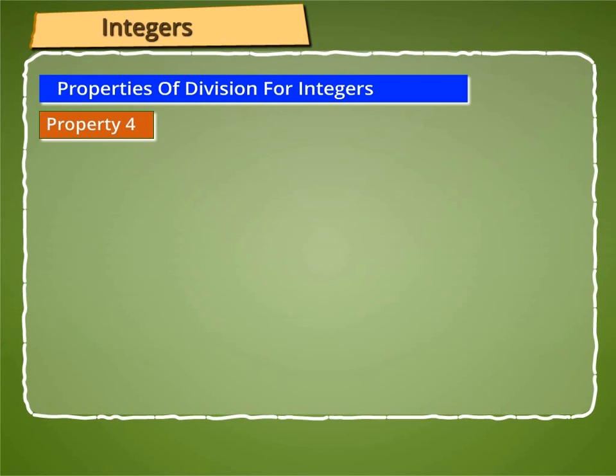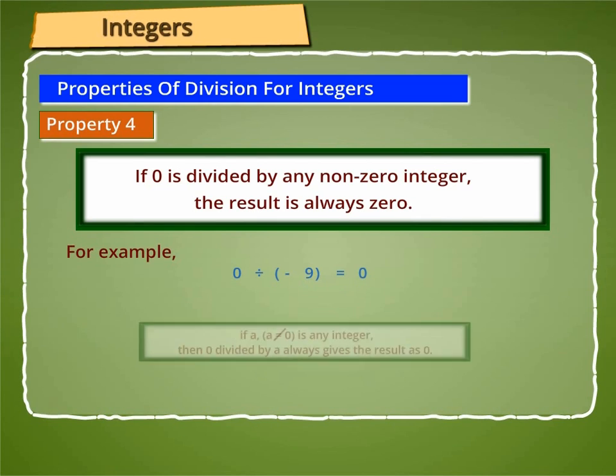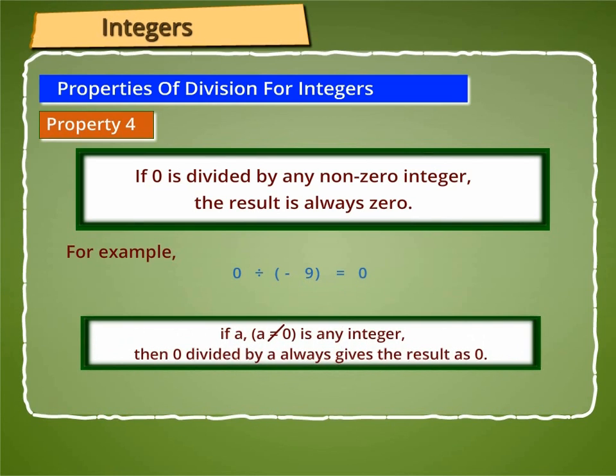Property 4: If 0 is divided by any non-zero integer, the result is always 0. For example, 0 divided by minus 9 is equal to 0. Hence, if a, a not equal to 0 is any integer, then 0 divided by a always gives the result as 0.